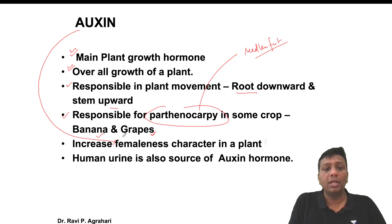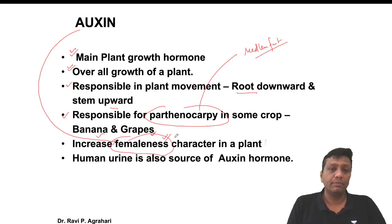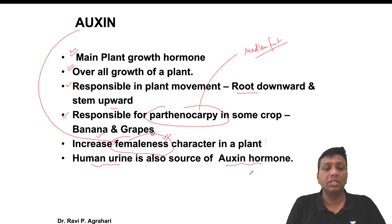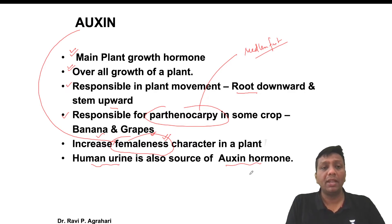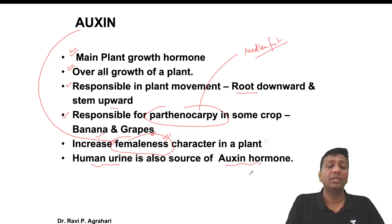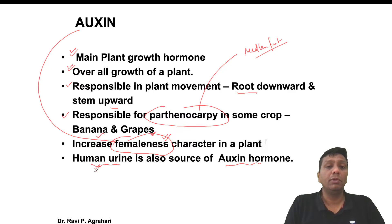When auxin is more in the plant body, the number of female flowers will increase. Human urine is the richest source of auxin hormone - if you apply it on any crop, it will increase productivity. The reason is that whatever food and vegetables you eat contain auxin, and that auxin comes out through your urine.